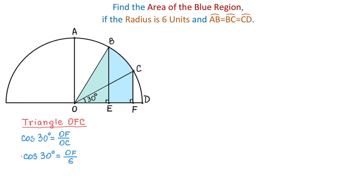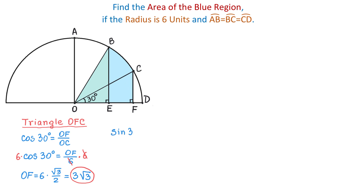To find OF, I will multiply both sides by 6. Then OF equals 6 multiplied by cosine of 30 degrees, which is square root of 3 over 2. So 6 divided by 2 is 3, and OF equals 3 square root of 3. That is the base of the triangle. Now, sine of 30 degrees equals the opposite side CF divided by the hypotenuse OC.